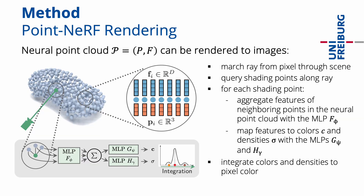A neural point cloud can be rendered to images from arbitrary viewpoints with a point NeRF formulation. Essentially, this works like NeRF, but the color and density of a 3D point is computed from its neighboring points in the neural point cloud.